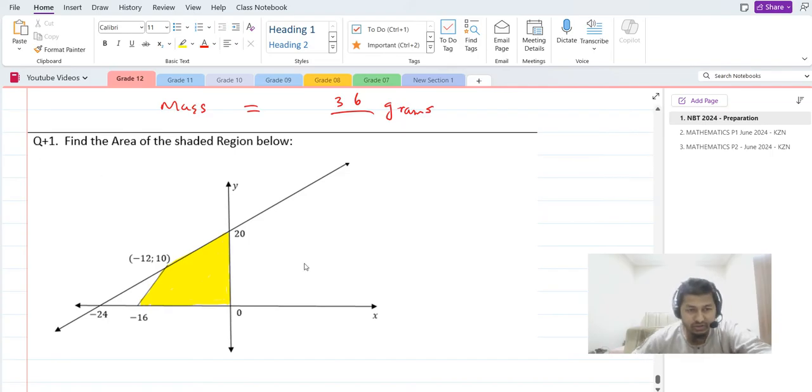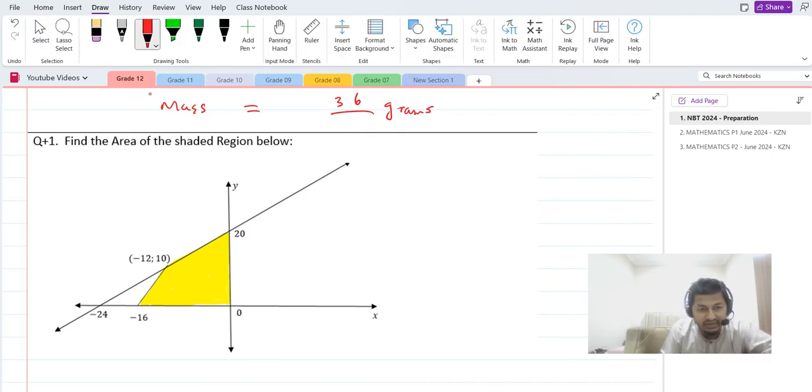So we want to solve the area of the shaded region here. In order to solve this area of the shaded region, don't focus on this only. What you can do is work with the big triangle. Let's work out the area of the big triangle, this green portion here.